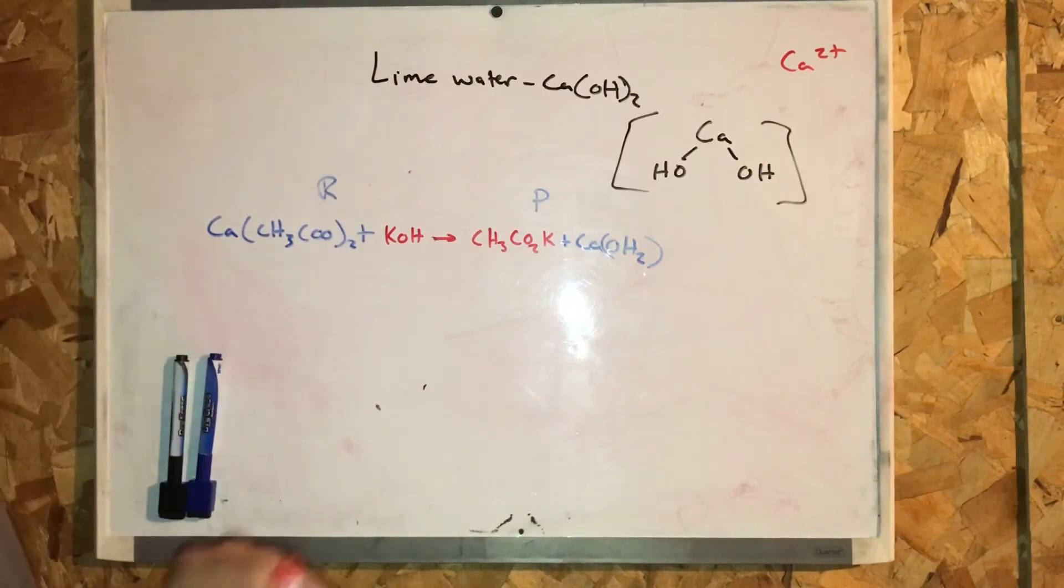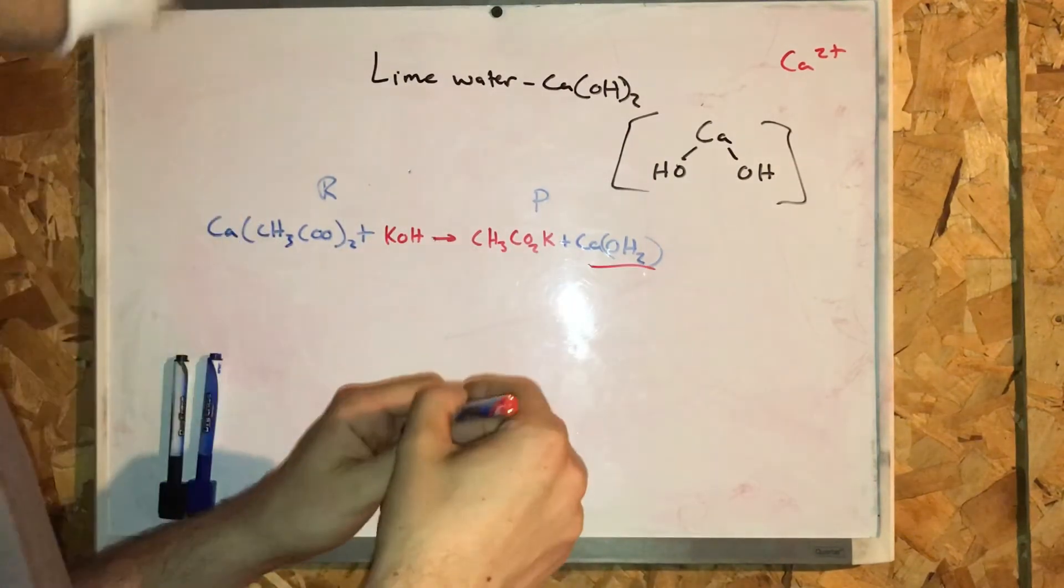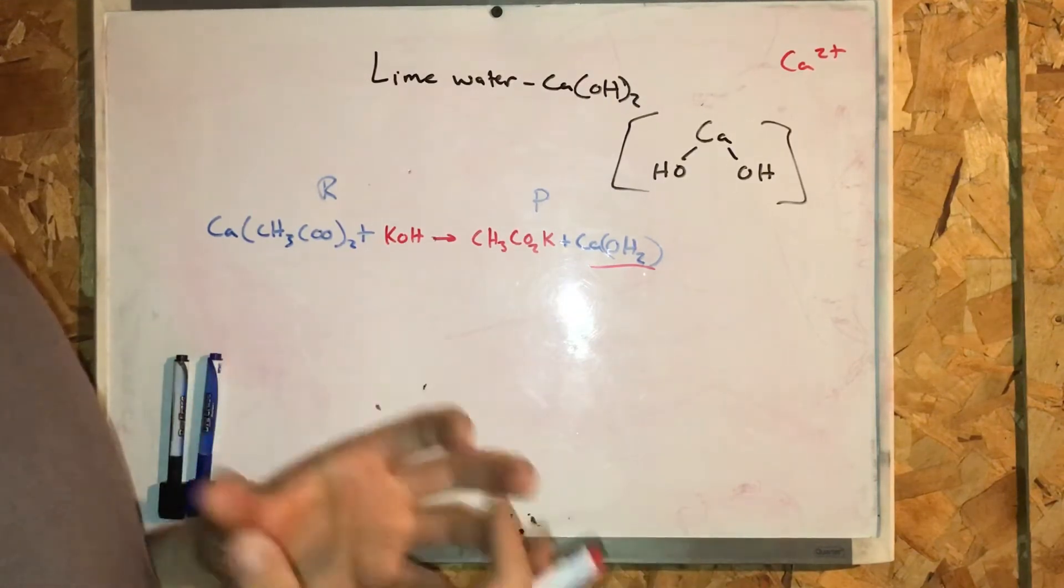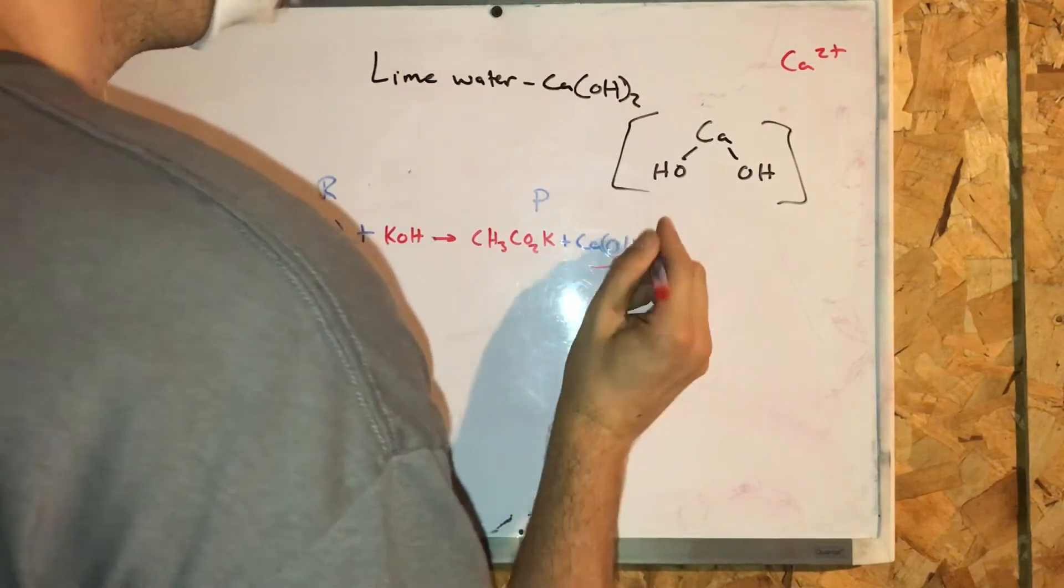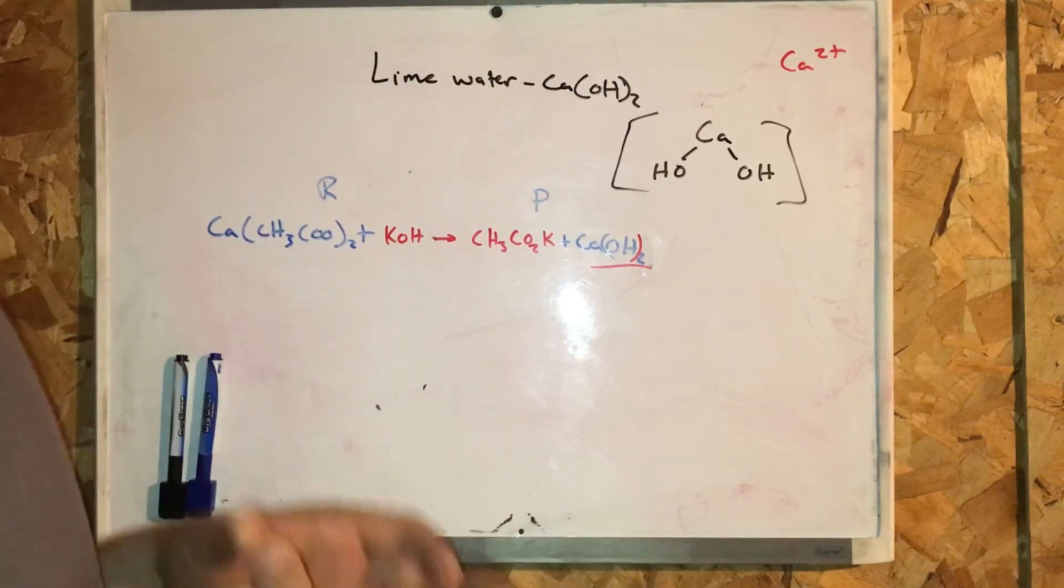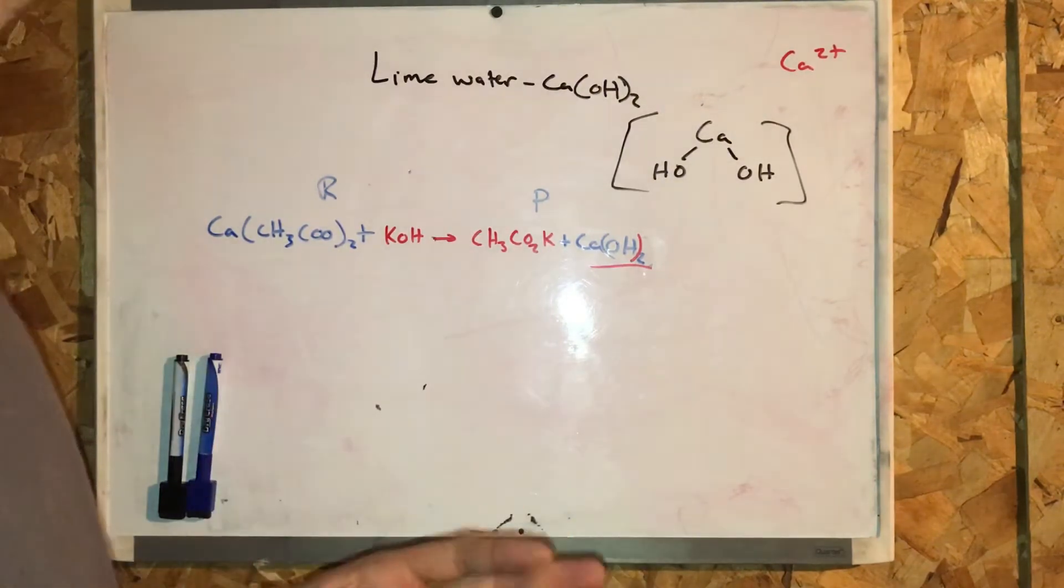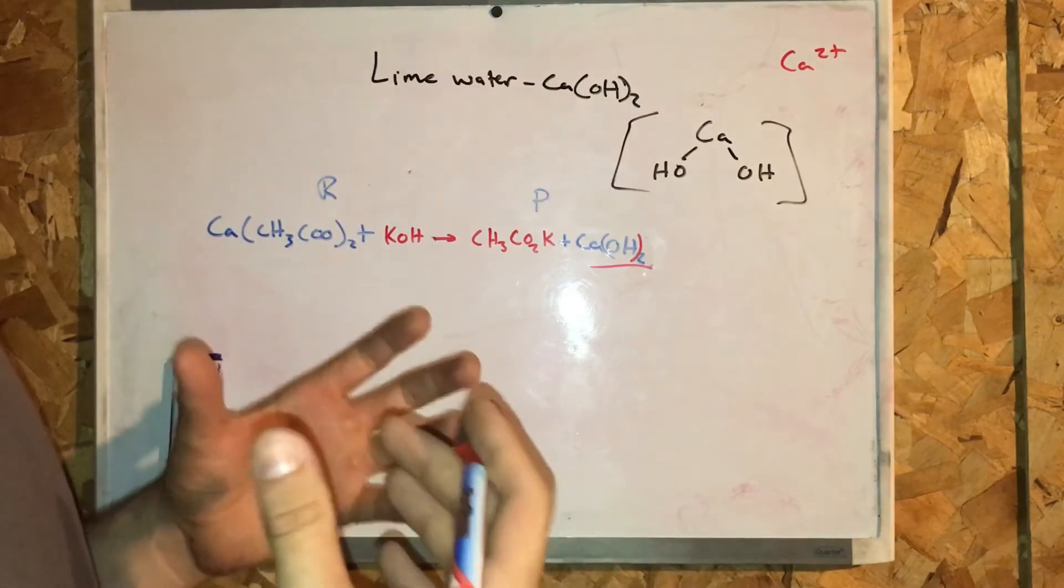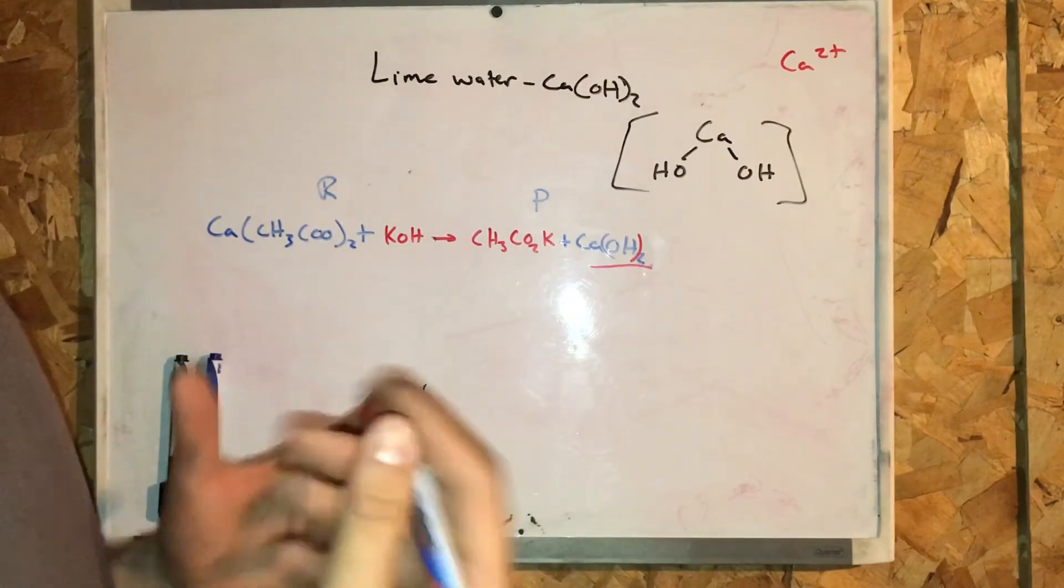So calcium hydroxide is an inorganic compound with the chemical formula Ca(OH)2. It has many names, including hydrated lime, caustic lime, builder's lime, slack lime, cow, or even pickling lime. Lime water is the common name for a saturated solution of calcium hydroxide.